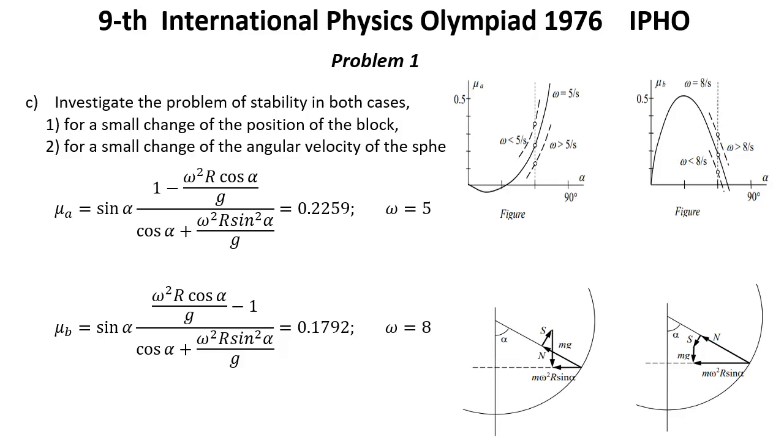So that was first case. Second case, when bodies try to move upward because omega is big enough and the force of friction going downhill.